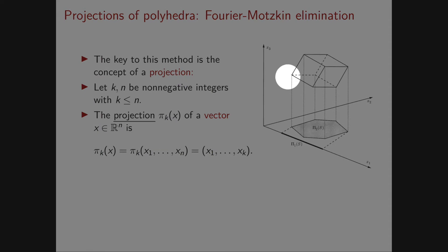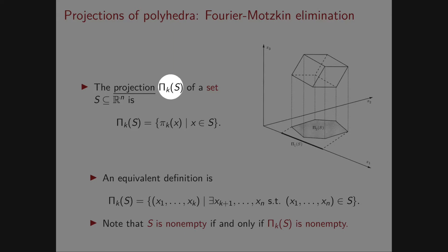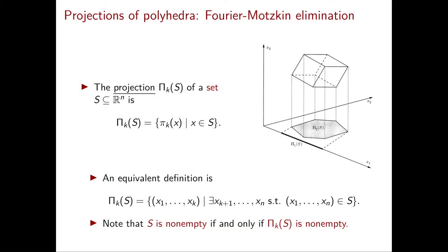In the picture here on the right, if you look at this extreme point, of course it lives in R3, so it is a vector with three components. Now its projection is this vector down here, which is obtained by just trashing the third component. Now we can use the definition of the projection of a vector to define the projection of a set. The projection of a set S in Rn is denoted by capital pi_k of S and it's simply the set of the projections of all the points in S.